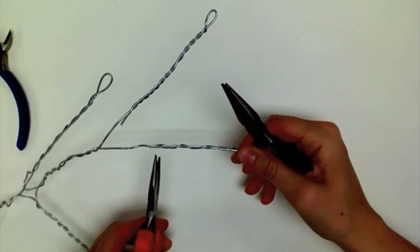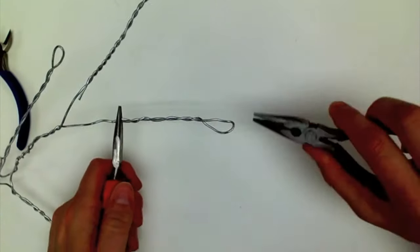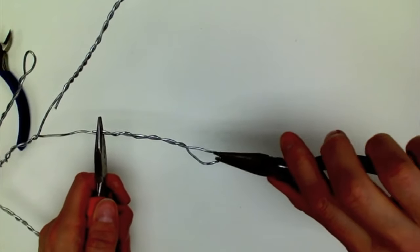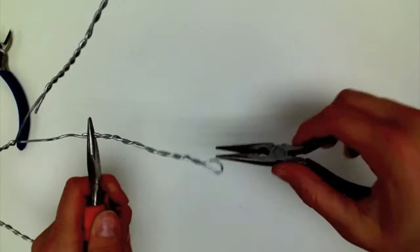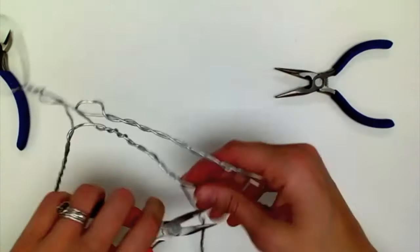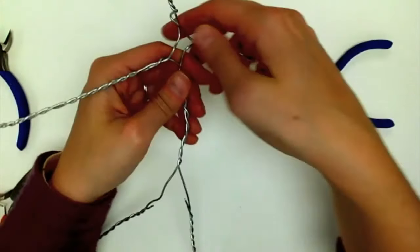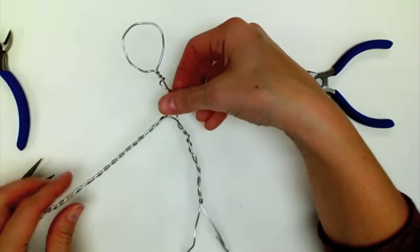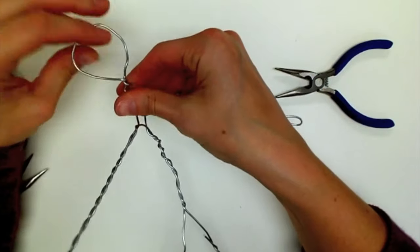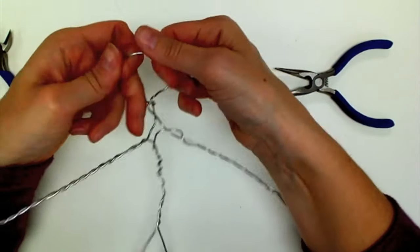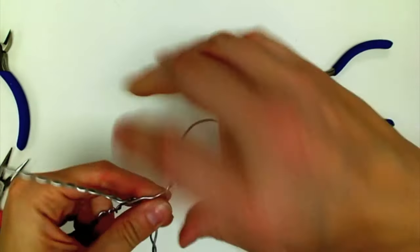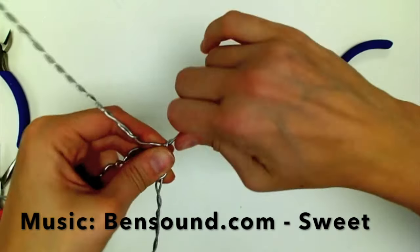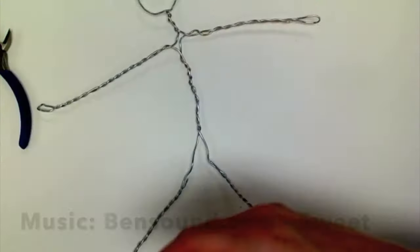This armature is just the skeleton of your wire sculpture, so it will be thin. You'll build up the mass and thickness with colored wire later. This is just the skeleton, so it's supposed to be really thin. That's all you have to do to make your armature.